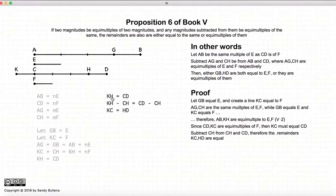So starting with KH equals CD, let's subtract CH from both sides of this equality. Well, what is KH minus CH? That's just this line here, KC. What's CD minus CH? It's just this line here. So we end up that KC is equal to HD.